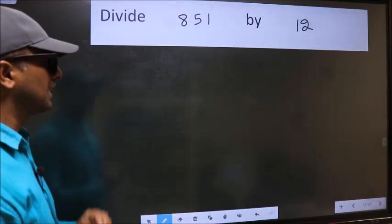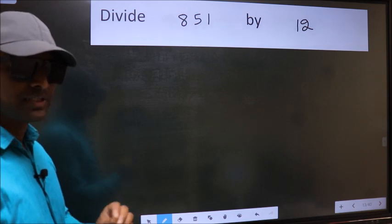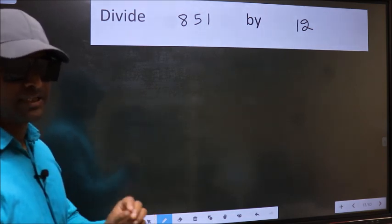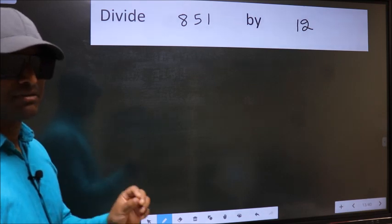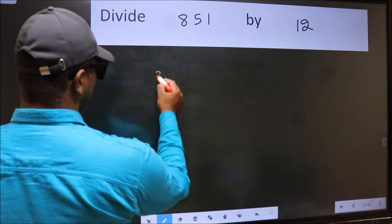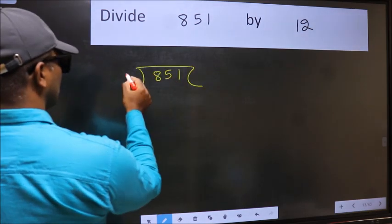Divide 851 by 12. While doing this division, many make this mistake. What is the mistake that they do? I will let you know, but before that we should frame it this way: 851 and 12 here.